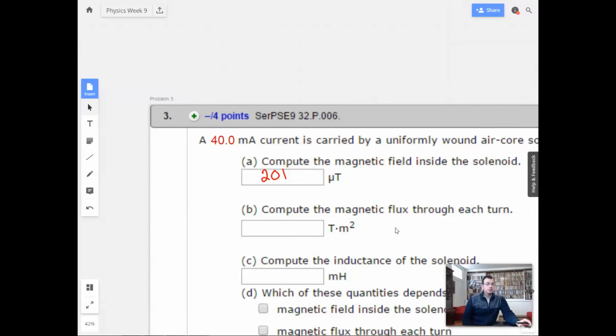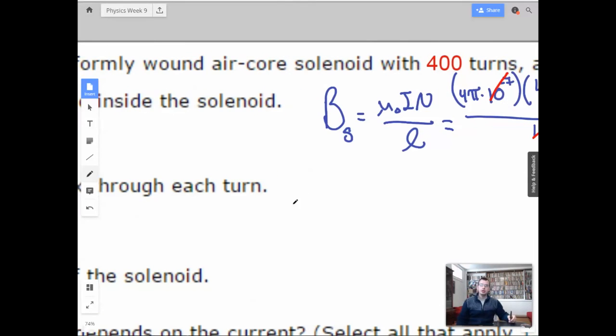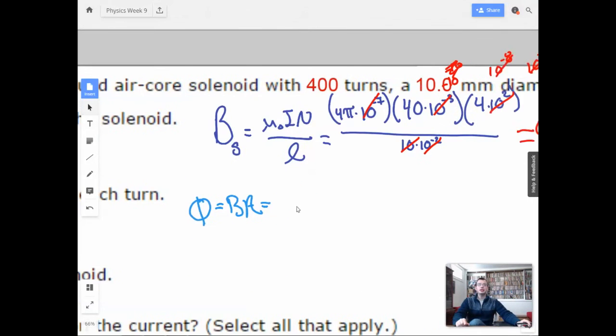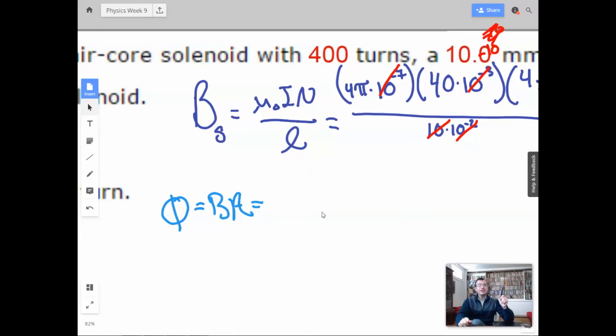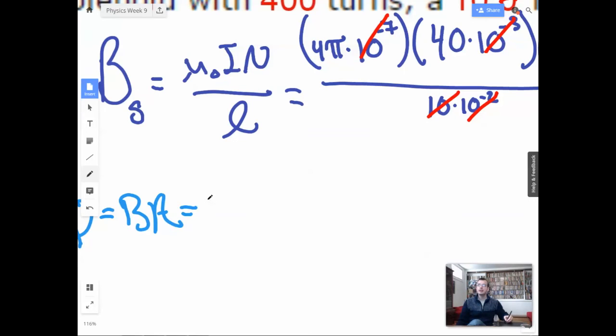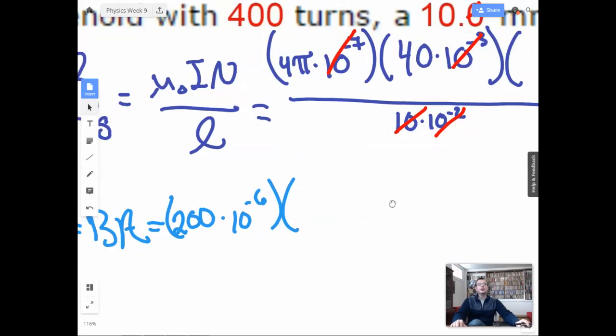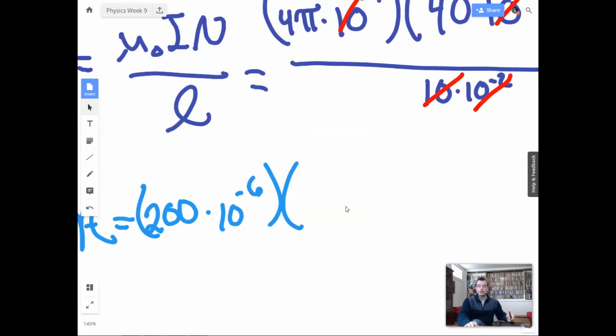Calculate the magnetic flux through each turn. So magnetic flux, we know from earlier. That red is just too aggressive. Baby blue. So it is magnetic field times area. Through each turn. So each turn is going to be a circle with a diameter of 10 millimeters. A diameter of 10 millimeters is a radius of 5 millimeters. So I'm going to have 200 times 10 to the negative 6th times 5. So we're going to do 5 times 10 to the negative 3rd squared. Pi R squared. That's the area of a circle.